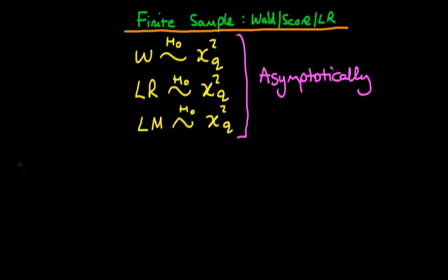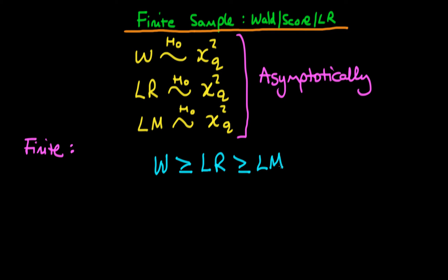But in practice, we never actually work with infinite samples. So what we'd like to ask is: is there a relationship between these test statistics in finite samples? And it turns out that there is. It is possible to prove that the value of the Wald statistic is always greater than or equal to the value of the LR statistic, which in turn is always greater than or equal to the LM statistic, at least in finite samples. And because we compare each of these test statistics to the same chi-squared distribution with q degrees of freedom, we can say something about the relative chances of rejecting a null hypothesis in each of these different tests.